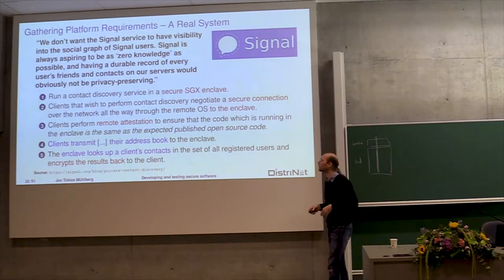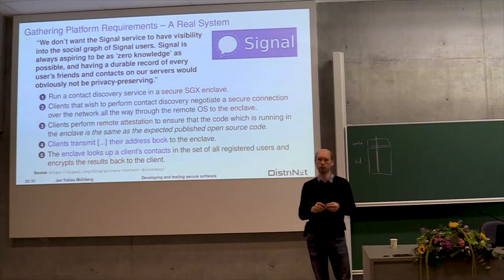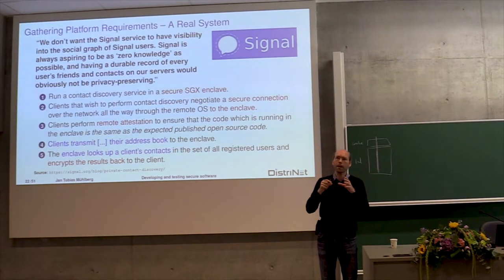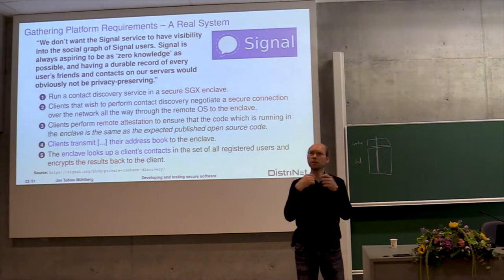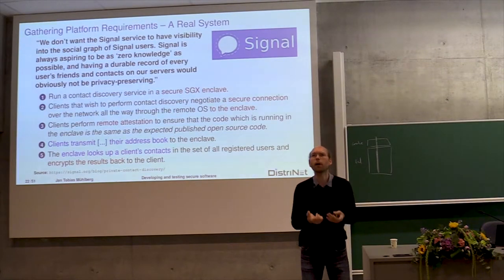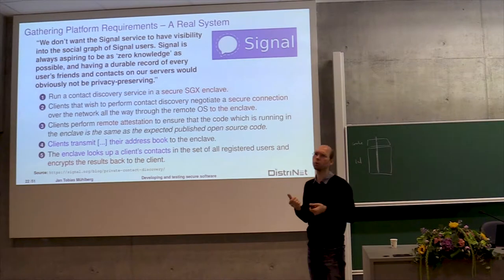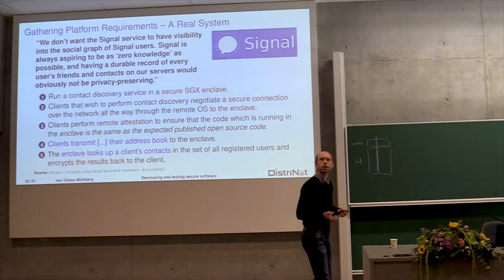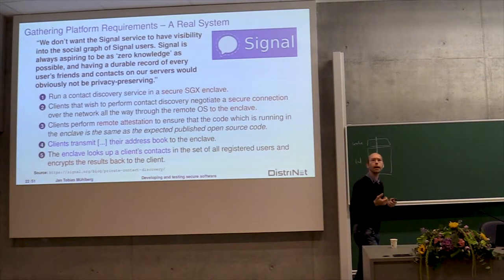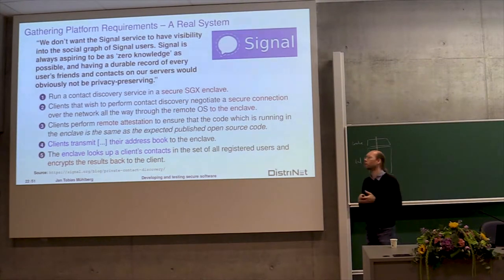When that enclave is destroyed after the contact syncing process is finished, even the cloud provider — even the person who installed the operating system on that remote machine — has no access to the data that has been processed there. It was always stored in an encrypted way in memory and there's really no other way of accessing it beyond side channels.